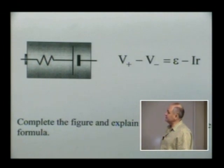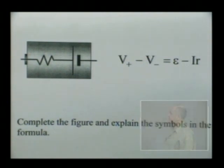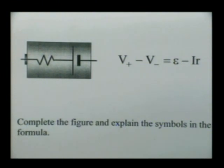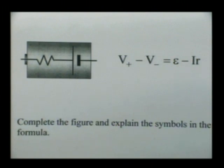The answer to today's quiz: first we mark appropriate quantities — epsilon, which is the electromotive force of the battery, and r, which is the internal resistance. This formula is valid if the current on the drawing flows to the left, and the potential difference V-plus minus V-minus is between the left-hand side and the right-hand side.